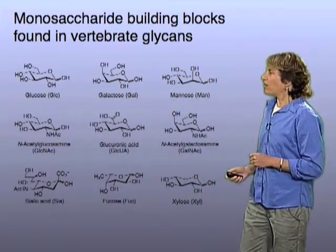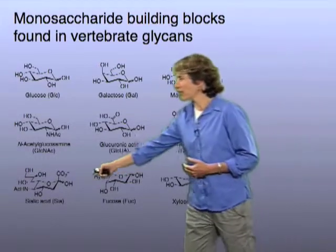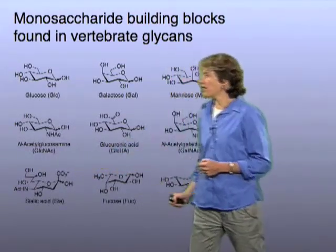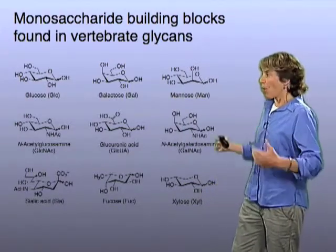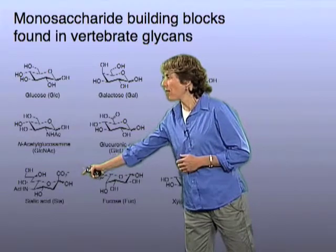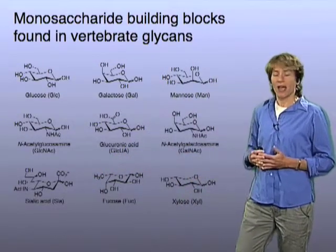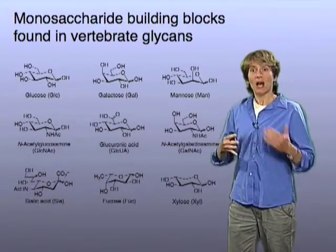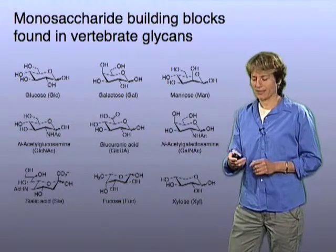Some of these sugars are perhaps more exotic in their structures. For example, this monosaccharide is called sialic acid. It has more carbon atoms than the other sugars, and it also has a carboxylate — it carries a negative charge. I'm going to come back to sialic acid later on, because it occurs in some interesting biological circumstances.